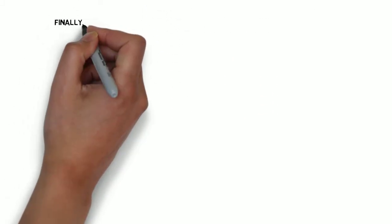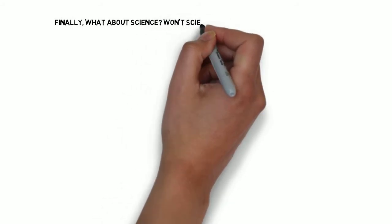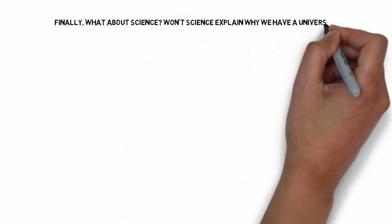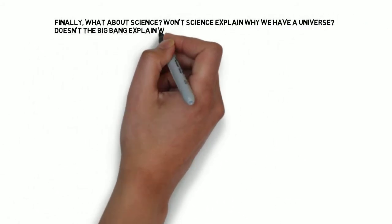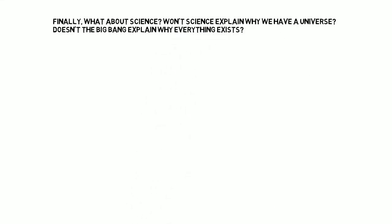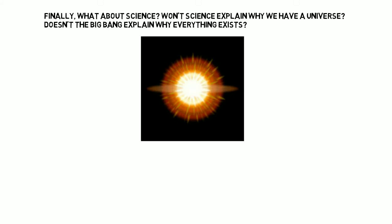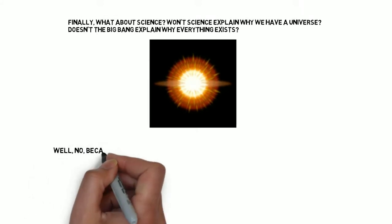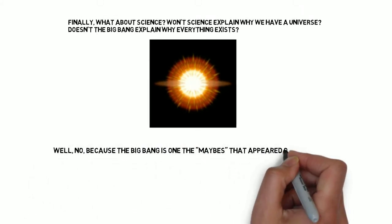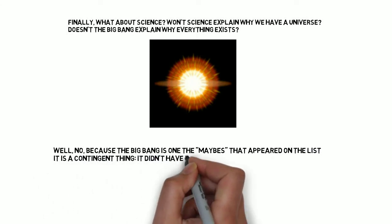Well, finally, what about science? Wouldn't science explain why we have the universe? Doesn't the Big Bang, for example, explain everything else that exists? Well, we've already answered that. The Big Bang is a contingent thing. It didn't have to exist. It's one of the maybes that appeared on the list. We can imagine a universe where the laws of physics wouldn't allow Big Bangs to happen.